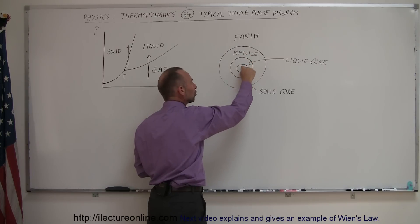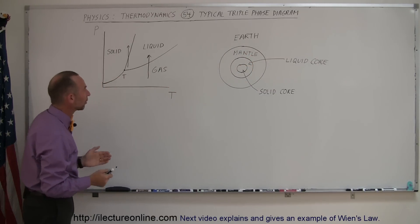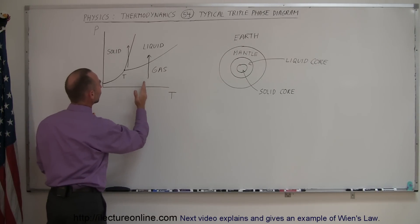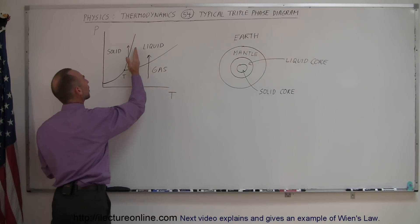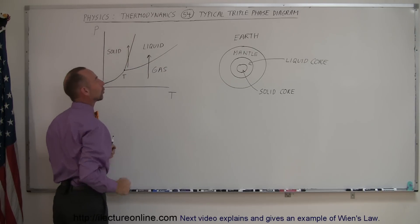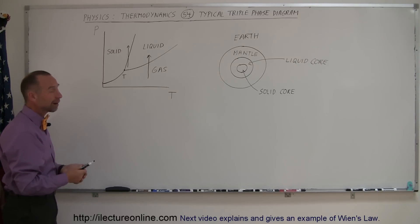And we know that the core of the earth is actually a solid core because the pressure. You can see even though the temperature is very high at the center of the earth, you go to the right, if you just apply enough pressure, enough force, you will turn the liquid core into the solid core, and that's exactly what happens. So that's kind of a representation of the triple phase diagram for most substances in the universe.